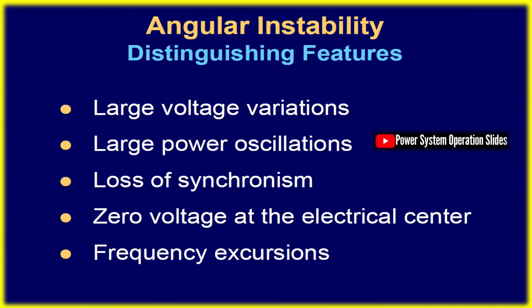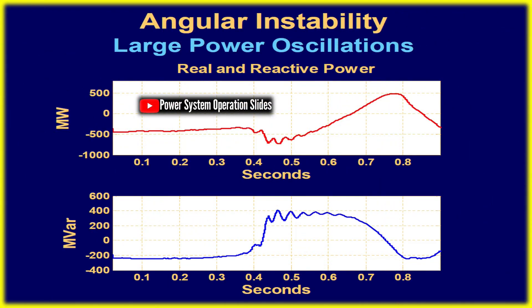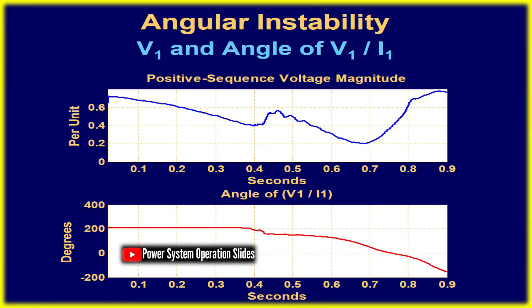Consider a two-source power system at a balanced angle transferring power. Following a fault, power output declines to PF, leading to rotor acceleration and an increase in delta. Once the fault clears at delta C, higher electrical power output PC generates decelerating torque, but inertia keeps delta increasing until it reaches delta F, where gained acceleration energy equals lost deceleration energy, a condition described by the equal area criterion.